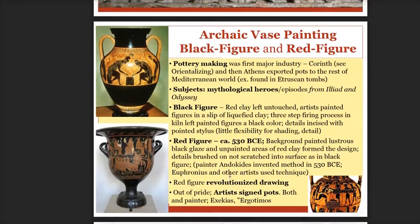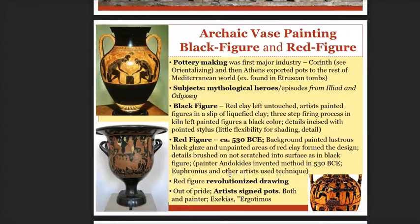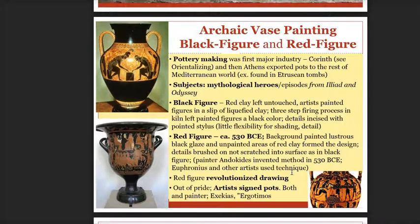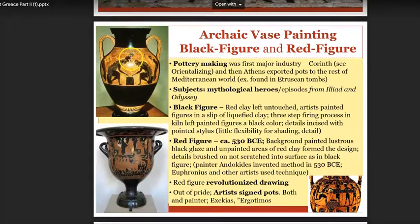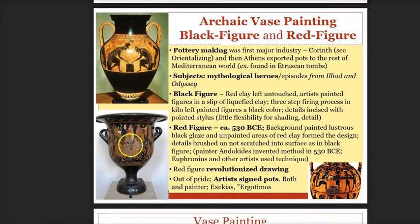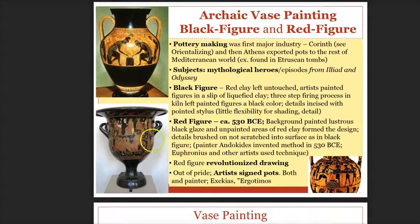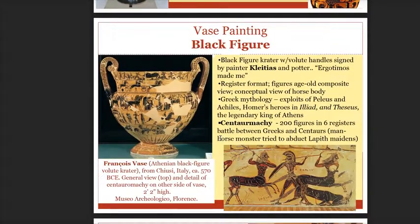Vase painting was another important element of Greek art. Vases were used to store oil and grains, used as decorative objects, and were considered very valuable. They were traded and also given as rewards for the Olympic Games. There were two main types of vase painting: black figure and red figure, and later white figure. In black figure painting, the figures were painted with black slip; in red figure, the clay was left unpainted.